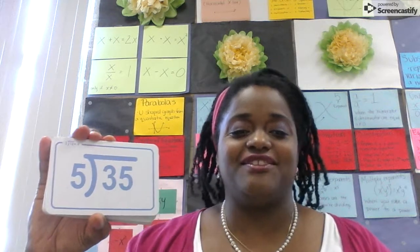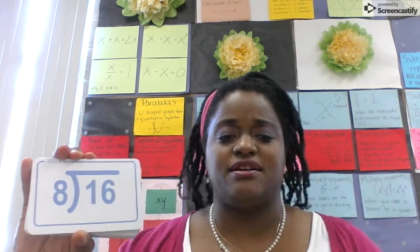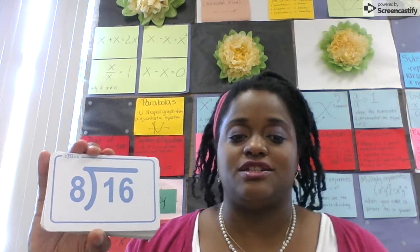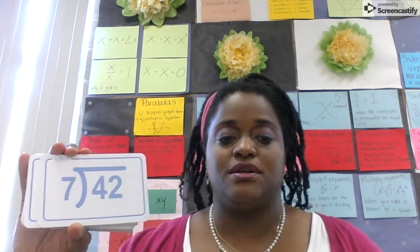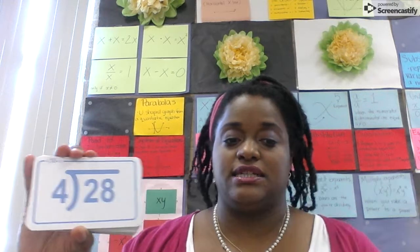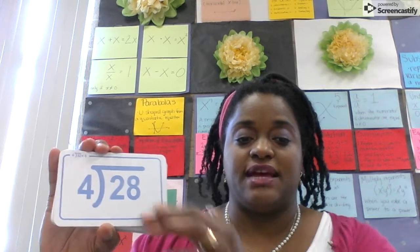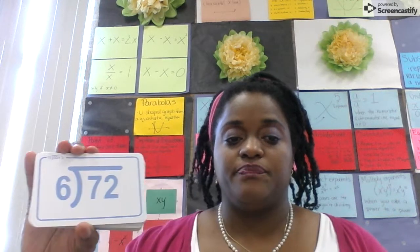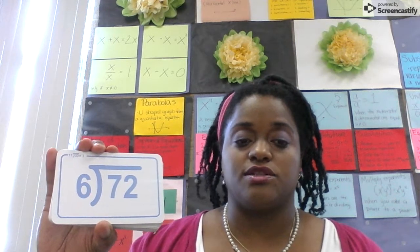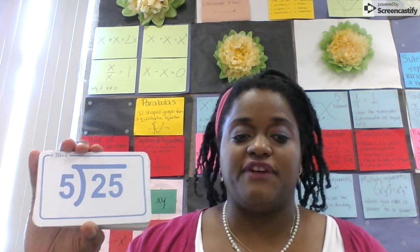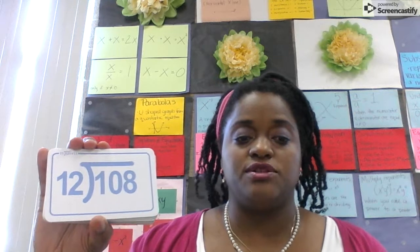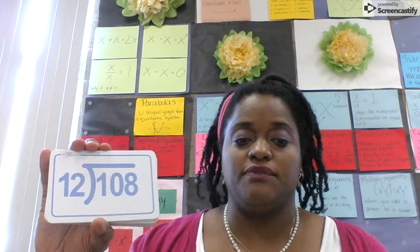35 divided by 5 is 7. 16 divided by 8 is 2. 42 divided by 7 is 6. 28 divided by 4 is 7. 72 divided by 6 is 12. 25 divided by 5 is 5. 108 divided by 12 is 9.